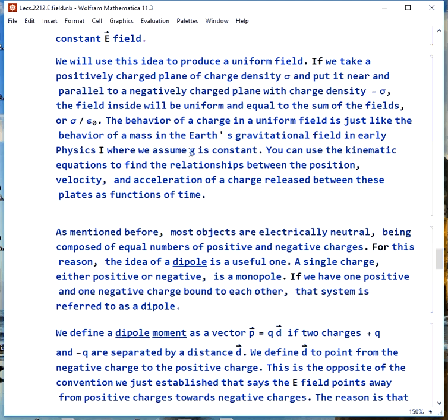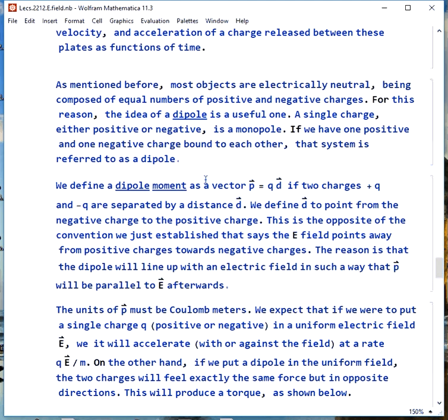Now, as we mentioned before, most objects are electrically neutral because there are equal numbers of positive and negative charges. Because of this, a dipole is a very useful idea. This is, if we have a single charge, either positive or negative, we call it a monopole. If we have one positive and one negative charge bound to each other, that's a dipole.